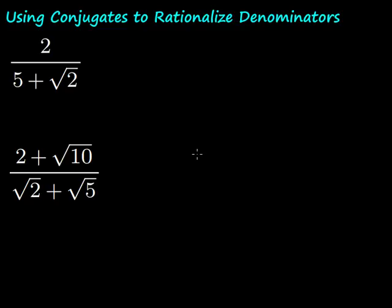In this video, we're going to take a look at using conjugates to rationalize denominators. We know that it's not okay to leave a radical in the denominator of a fraction, so we have to figure out a way to get rid of it. If we have an expression like a binomial in the denominator, we're going to use what's called the conjugate to rationalize that denominator so that our expression will be in simplest form.